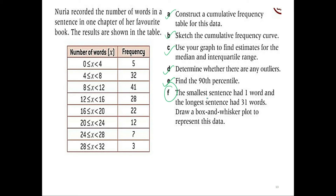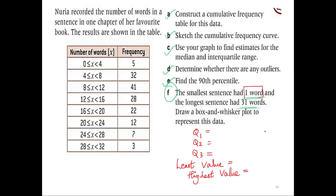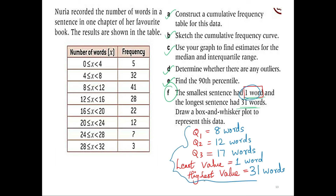Moving on to the last part of the question — the smallest sentence has one word and the longest sentence has 31 words. Draw a box and whisker plot to represent this data. The five things you need are Q1, Q2, Q3, the lowest value, and the highest value. From the cumulative frequency curve I have found Q1 as 8 words, Q2 as 12 words, and Q3 as 17 words. The least value is 1 word and the highest is 31 words.